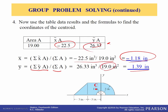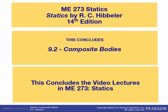Here is the table summarized. Using our composite body equations: x-bar equals the summation of x-tilde times A divided by the total area, which comes out to minus 1.18 inches. Y-bar equals 26.33 divided by 19, or 1.39 inches. The centroid is located here. It makes sense that the centroid is in the second quadrant, meaning x-bar is negative and y-bar is positive. This concludes chapter 9.2 on composite bodies, and also concludes the video lectures in ME273 Statics.